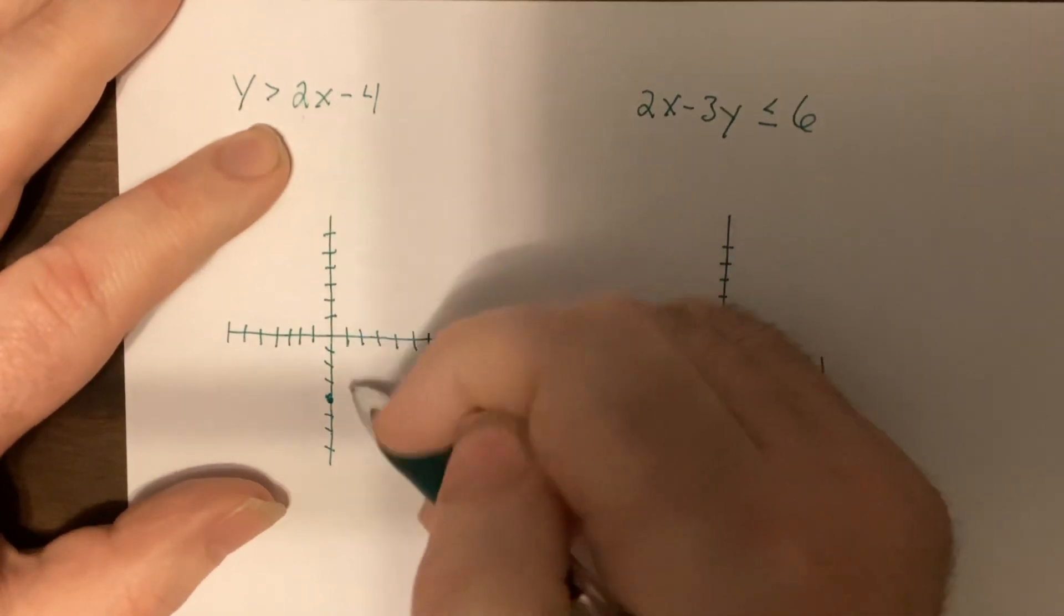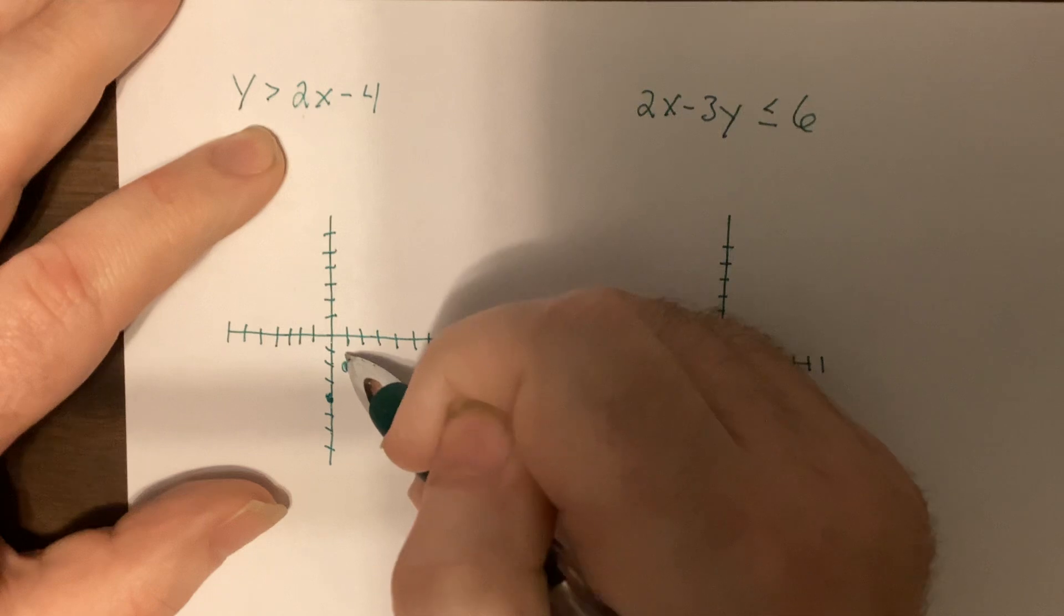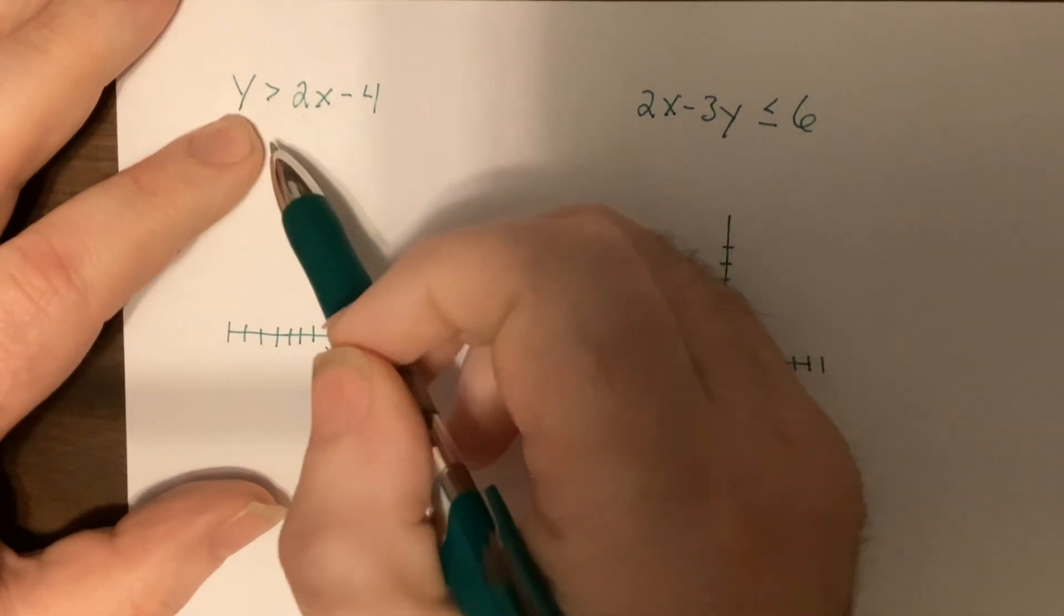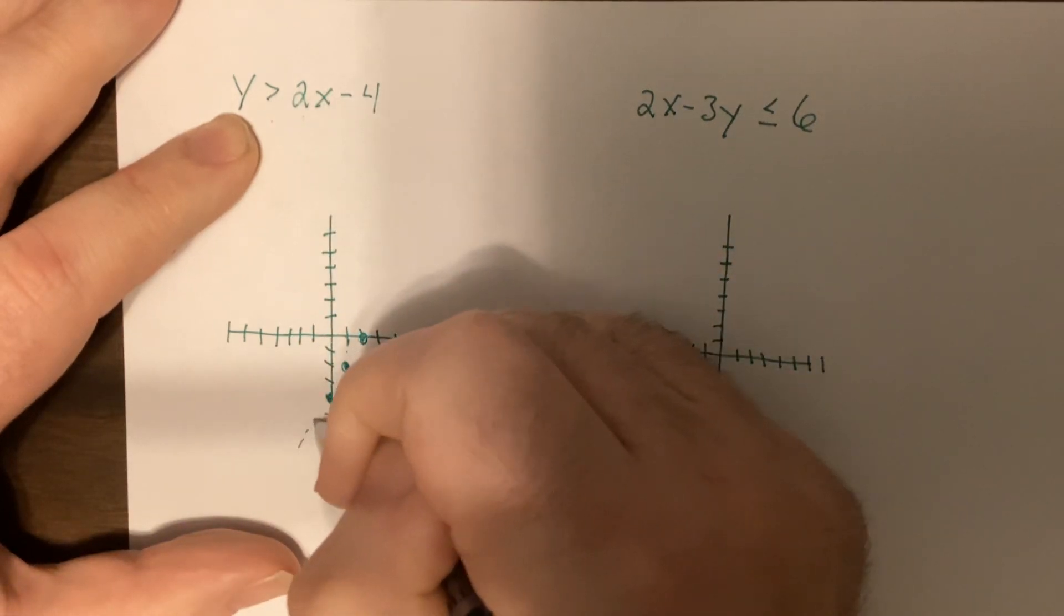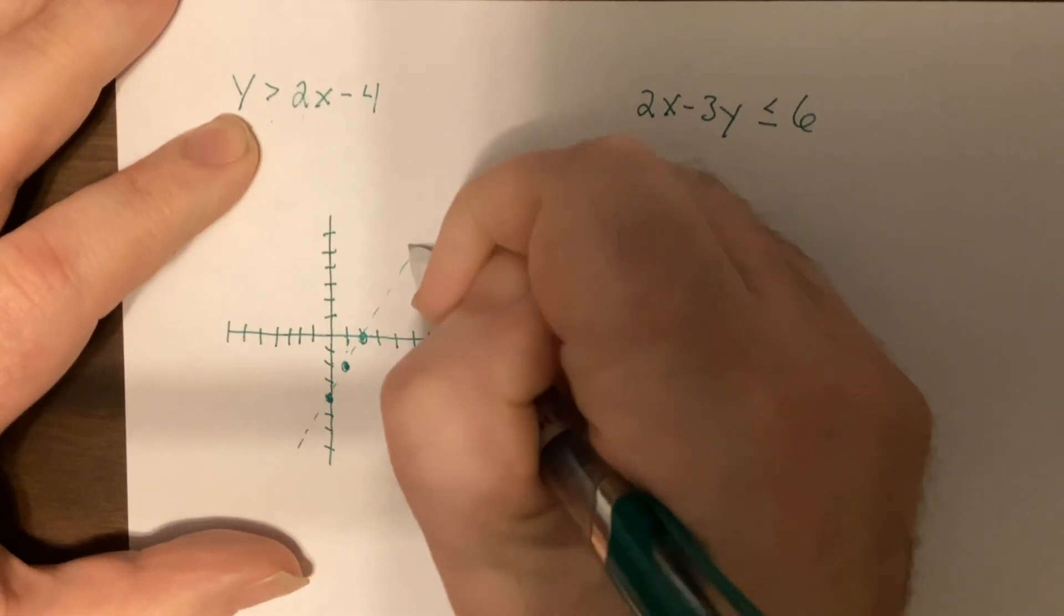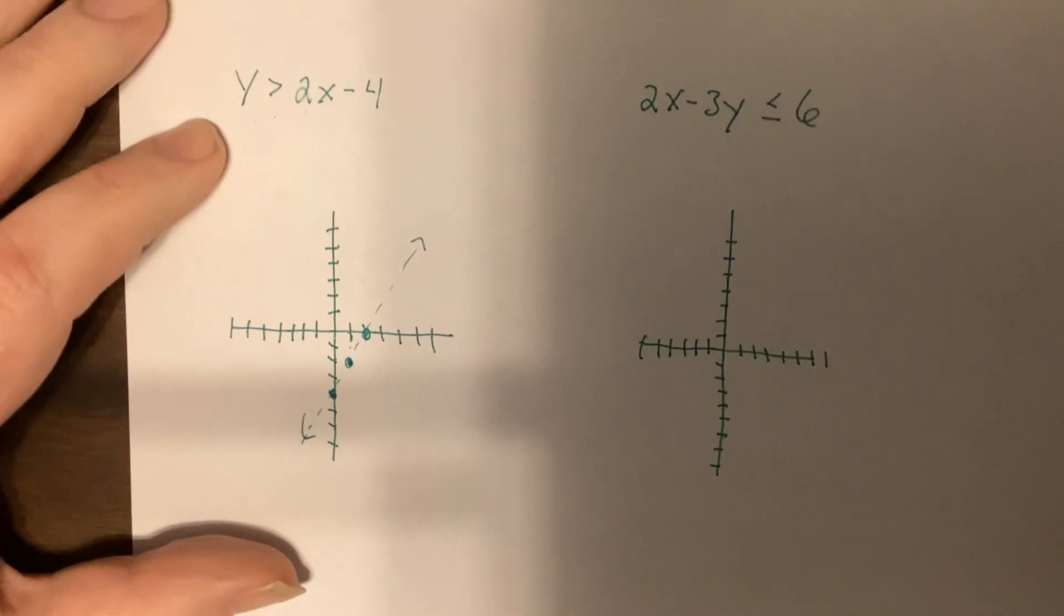Slope is two. So it'd be up two, right one. Up two, right one. Now notice there's no equals. So it'd be a dashed boundary or line if you want to call it that.